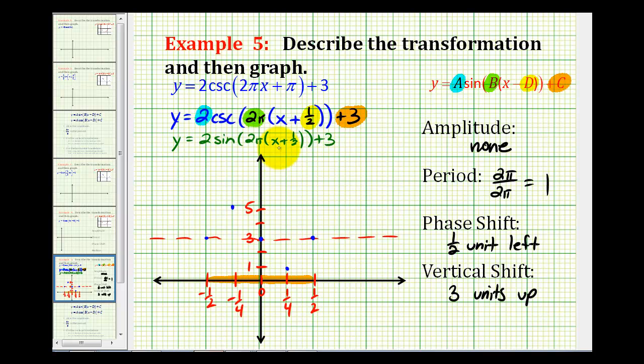Now again, this is the sine function, and I'm going to make it dashed, because it's not really the graph we want, but we're going to use it to determine the graph of our cosecant function.